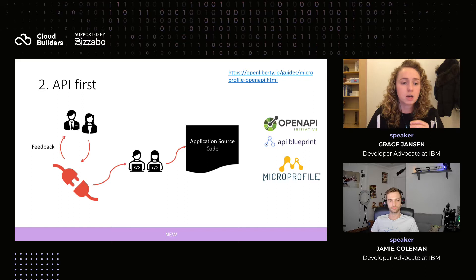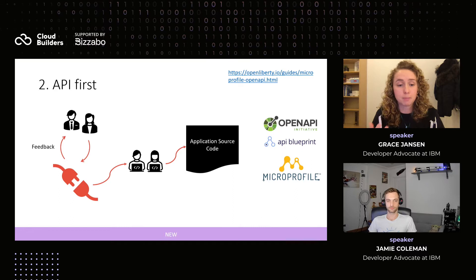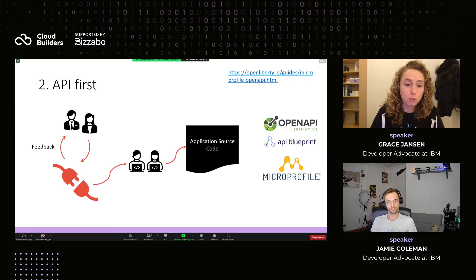API first is a really important factor because it helps to avoid things like integration failures, and it helps to formally recognize your APIs as a first-class artifact in your development process. You can utilize open source tools to do this — one we're going to look at today is OpenAPI. You can also use tools like API Blueprint, or proprietary products. We're going to be taking a look at OpenAPI today, which is open source and accessible through MicroProfile.